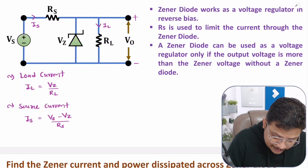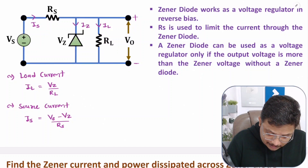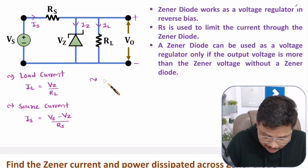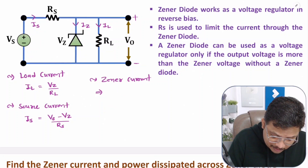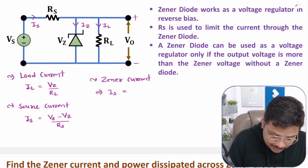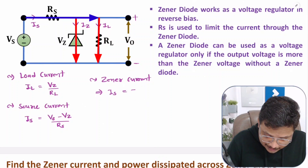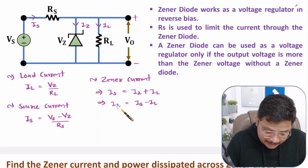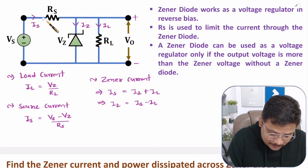If you want to calculate current passing through the Zener diode, Iz, you apply KCL. Entering current equals leaving current: entering current is IS, and leaving currents are Iz and IL. So Zener current Iz equals IS minus IL. Now we have Zener current, load current, and source current.